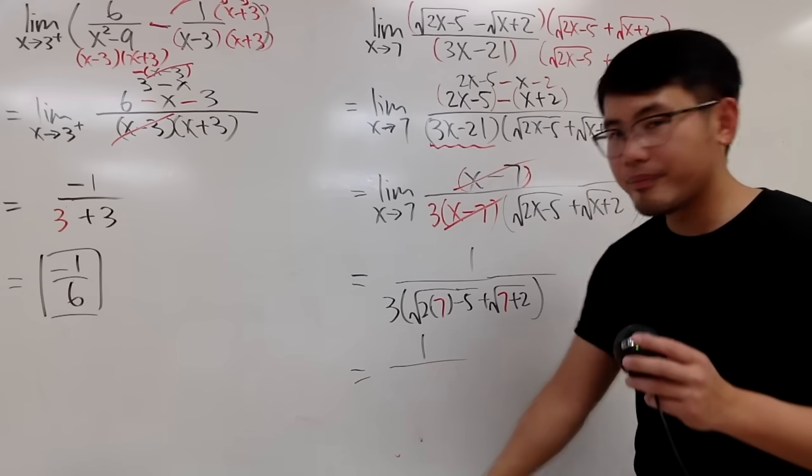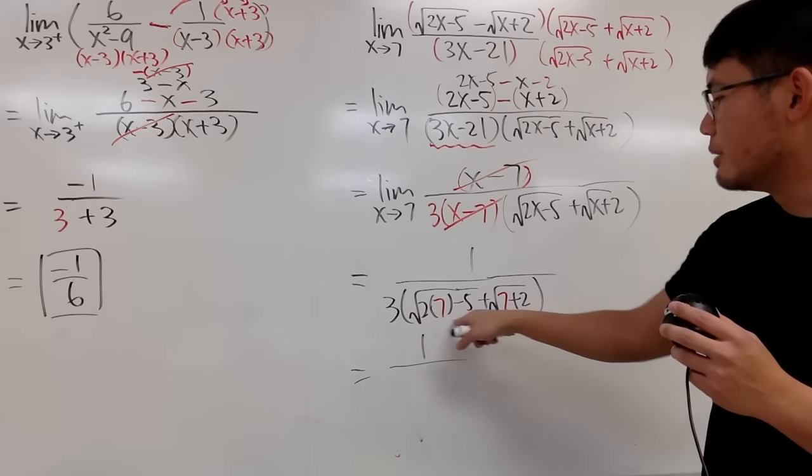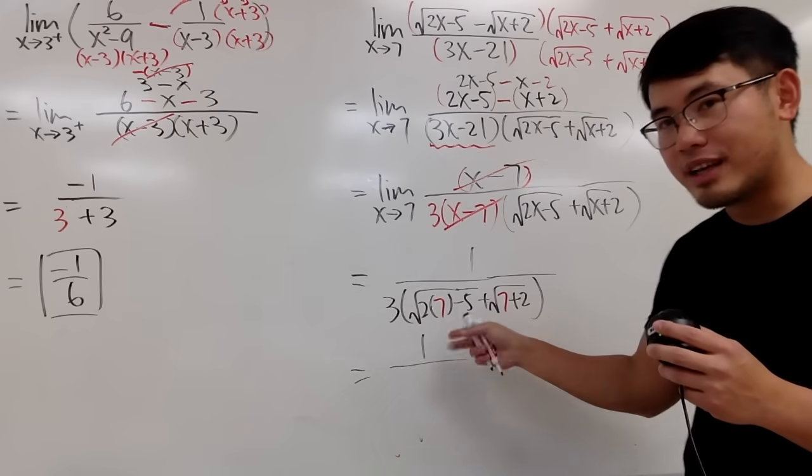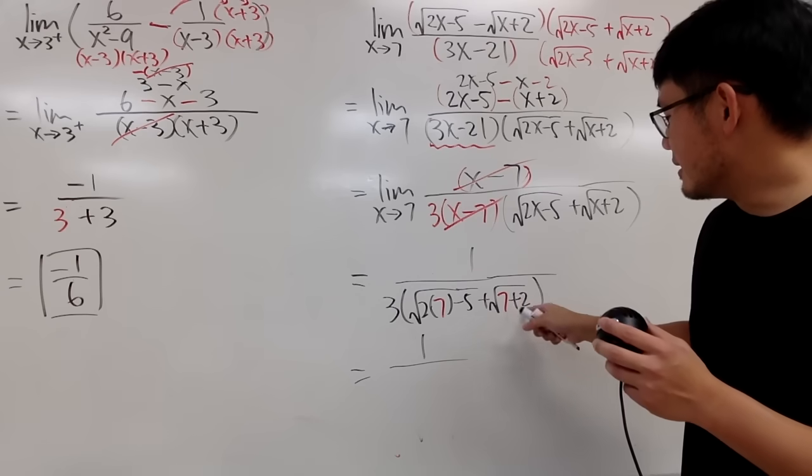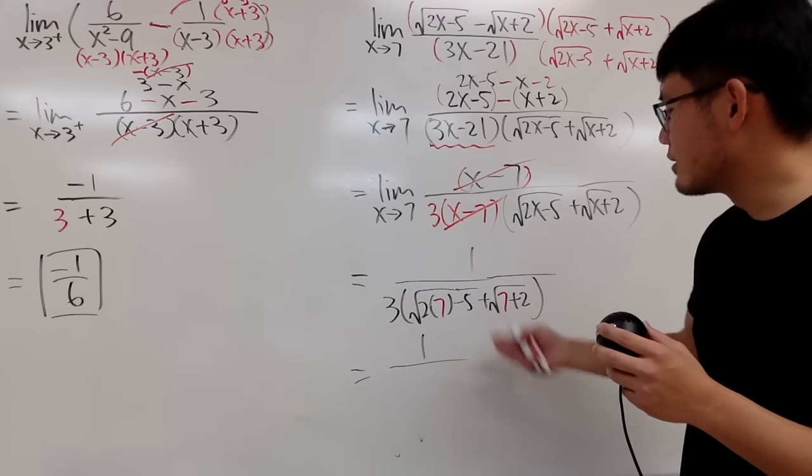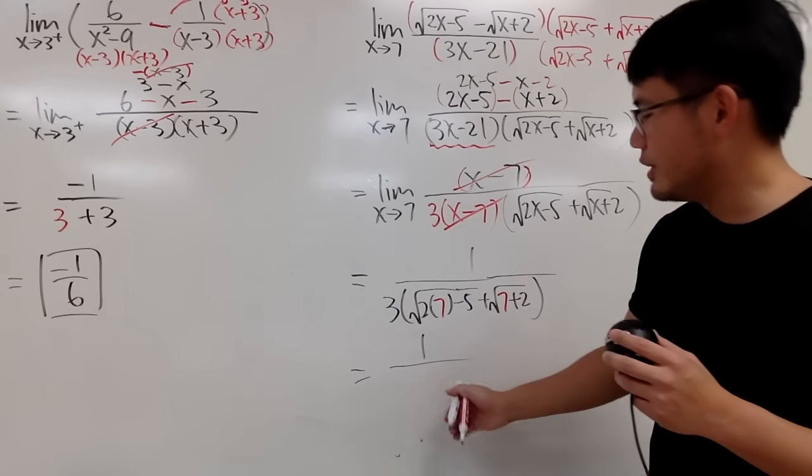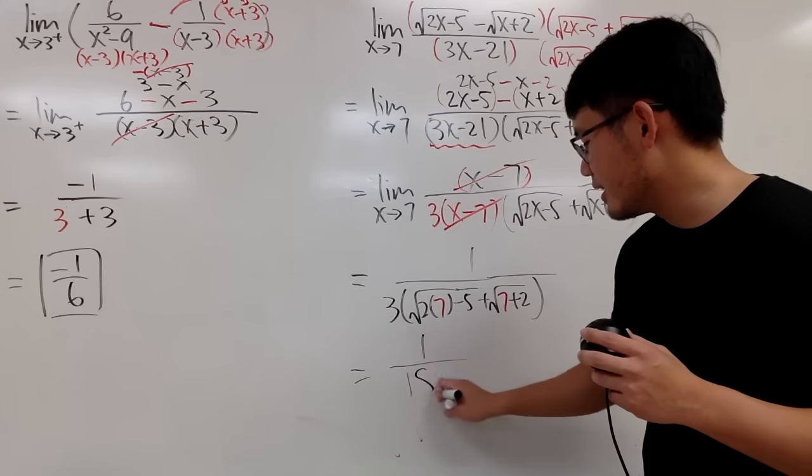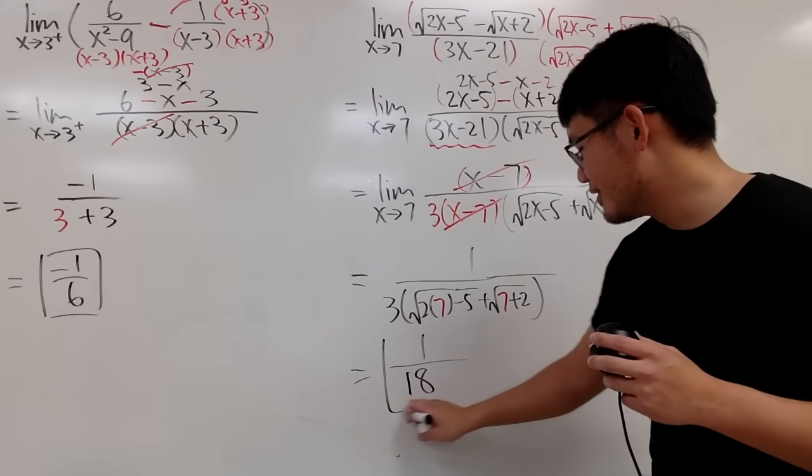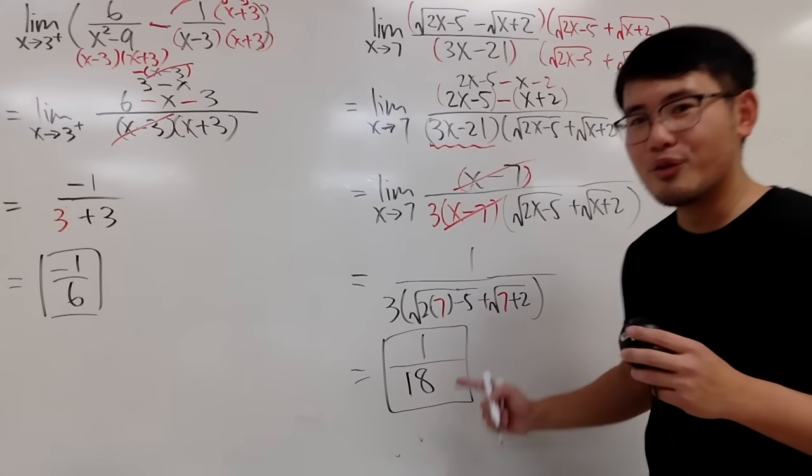Well, let's work this out. This is going to be 14 minus 5, which is 9. Square root of 9 is 3. This is 9. Square root of that is 3 again. So, 3 plus 3 is 6 times that 3 is 18. So, we just got our answer. 1 over 18.